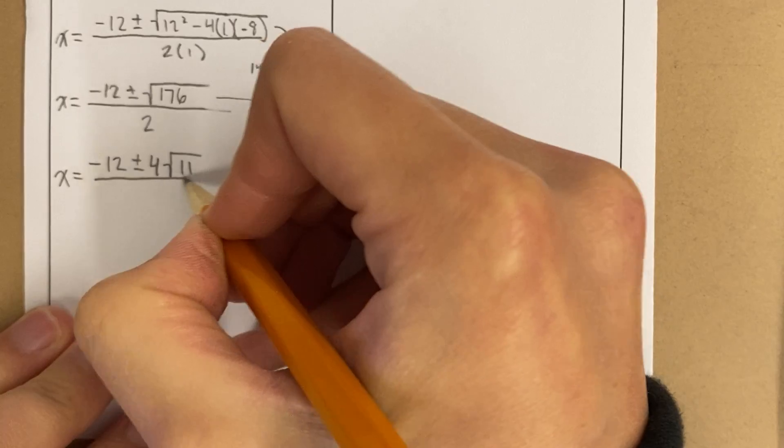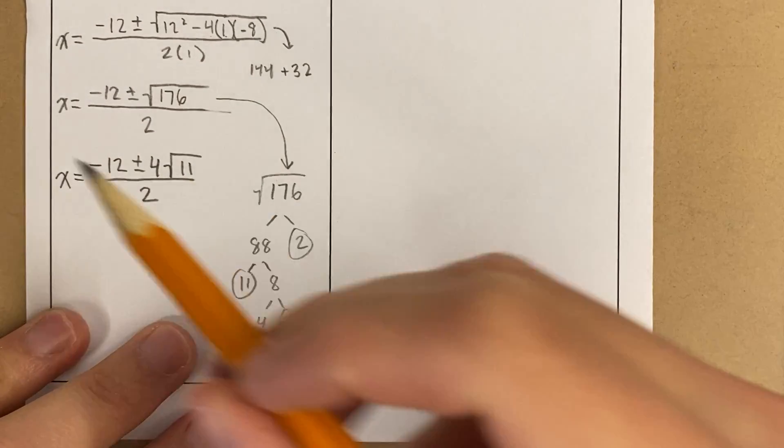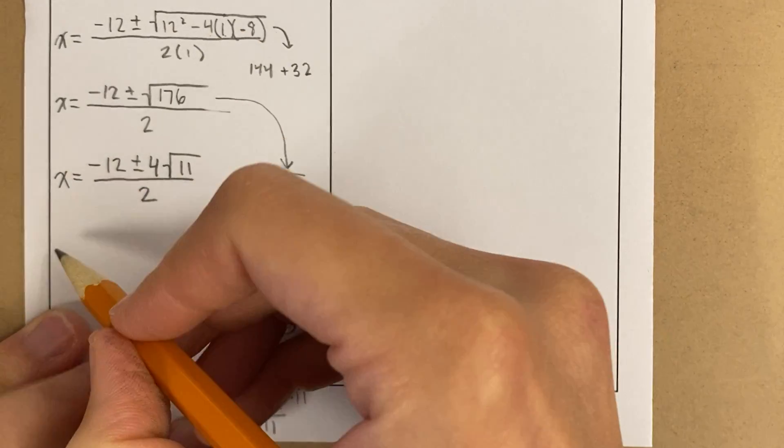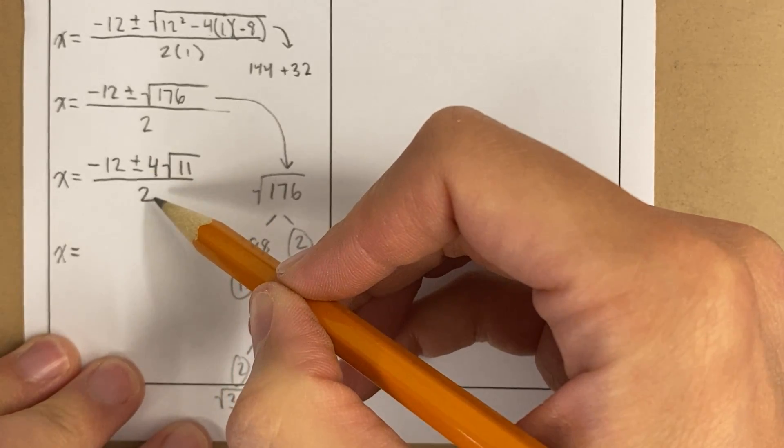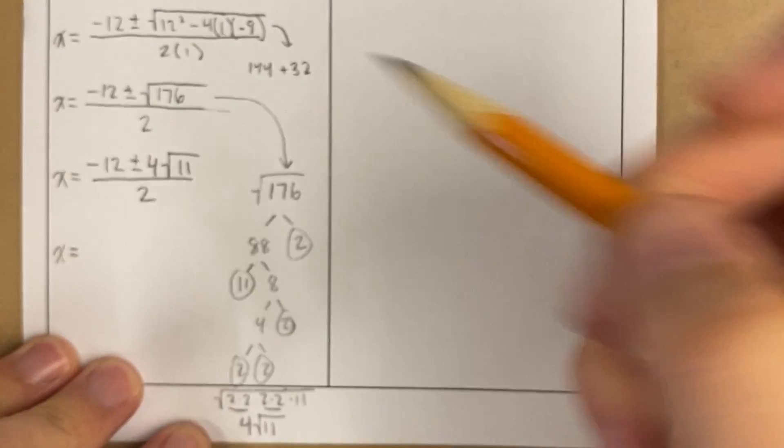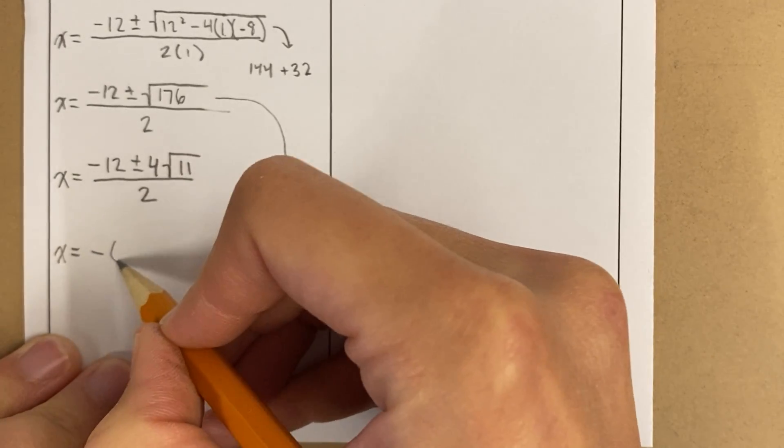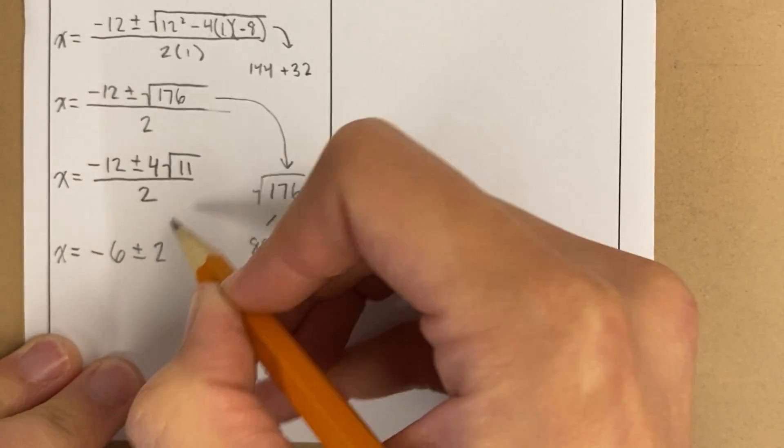Now, there's one more step. Here's why. Take a look. This is a fraction. Okay, I can simplify this fraction. Right, because negative 12 divides by 2, and 4 divides by 2 as well. So I can actually simplify this. Negative 12 divided by 2 is negative 6. 4 divided by 2 is 2.